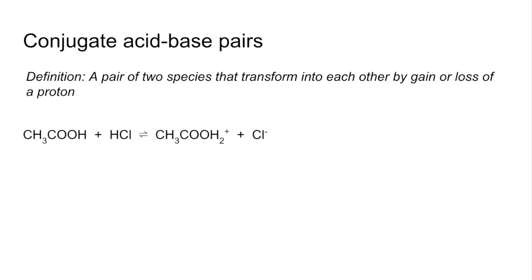There's the first one, ethanoic acid and hydrochloric acid. A bit strange, both acids, but ethanoic acid's a weak acid and hydrochloric acid's a strong acid. So if we look at this pair of species first,